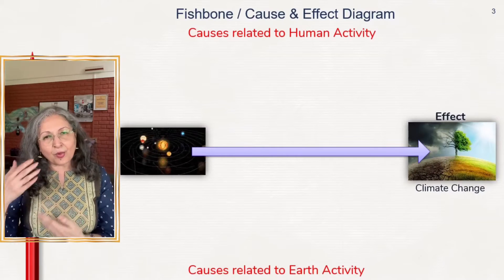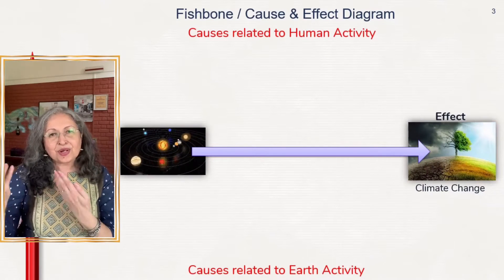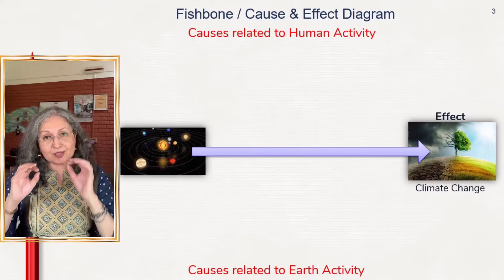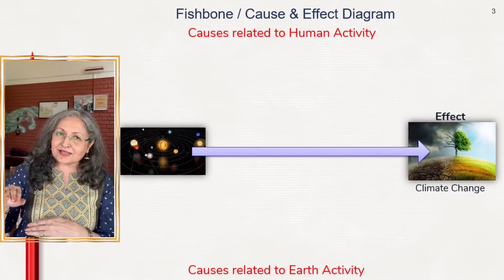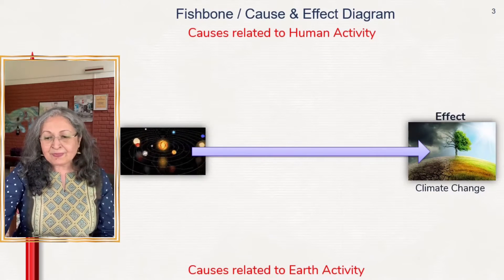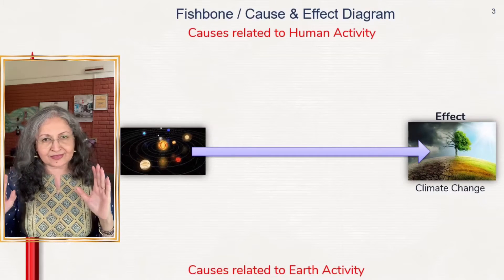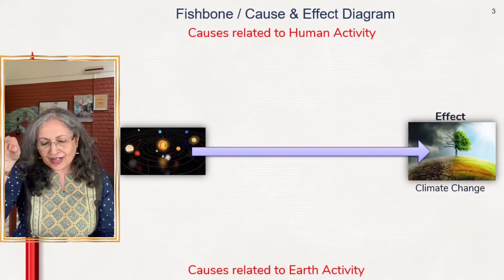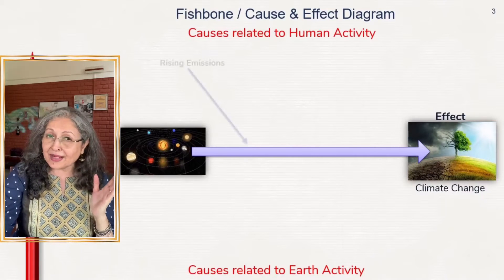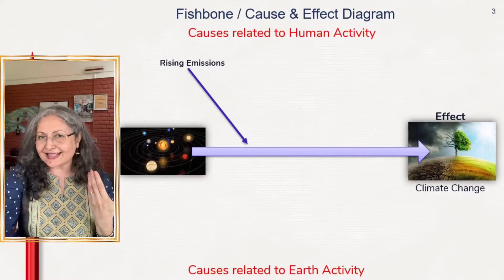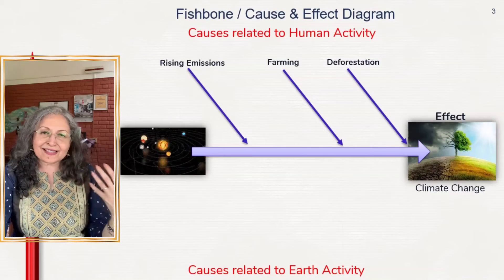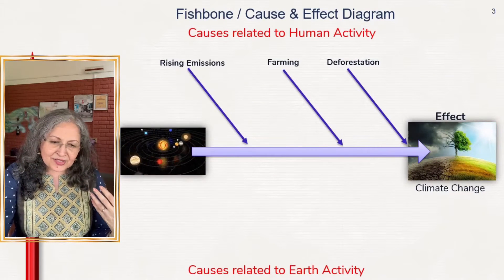What we are going to analyze is what are some of the causes that lead to climate change. As teachers of geography and earth sciences know, some causes are related to human activity, and others are related to earth activity regardless of human impact. You draw the spine, put the effect at the head of the fish, then start listing causes — for example, rising emissions, changes in farming, and deforestation — all human activity causes.